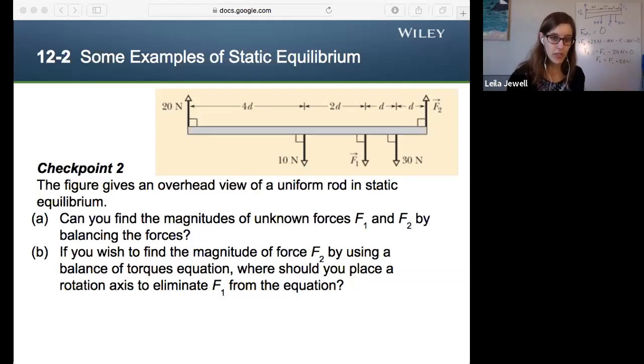So let's look at part B. If we wish to find the magnitude of force two by using a balance of torques equation, where should you place a rotation axis to eliminate F1 from the equation? So if we want to eliminate a force from the torque equation, we want to put our rotation axis where R will be zero. So the torque due to that force is zero.